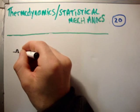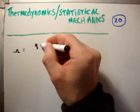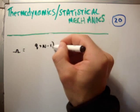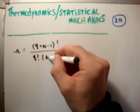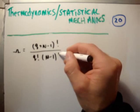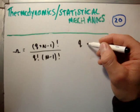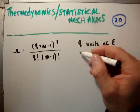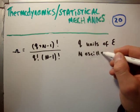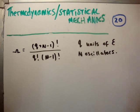We know that the multiplicity for an Einstein solid is (q + n - 1)! divided by q! and (n - 1)!. It has q units of energy and n oscillators. What we're looking to do is come up with a better, more usable way of looking at this.